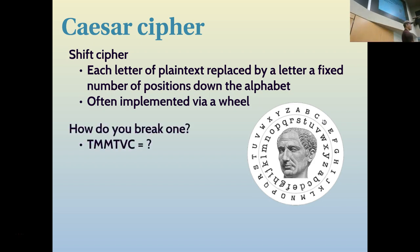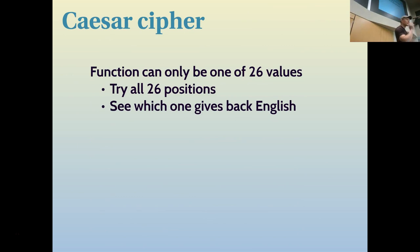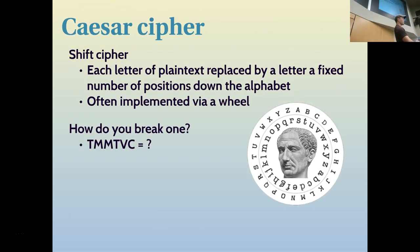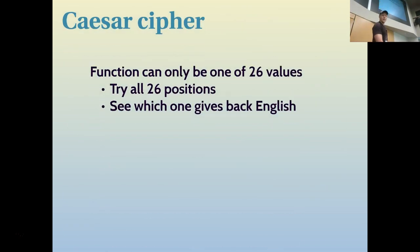How would you break a Caesar cipher? Brute force — try all 26 positions. On average you'd only have to do 13. One of them will give you back an English word. This particular example — if you rotate the wheel long enough, you'll see that the plain text is 'attack.' This is not very good cryptography: all you have to do is try 26 positions and see which one gives you back an English word.